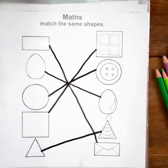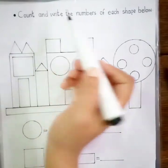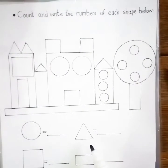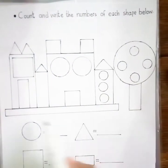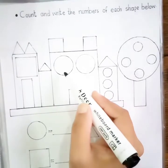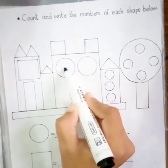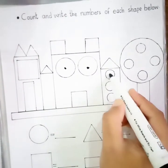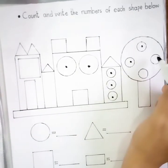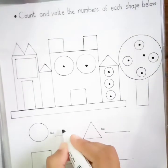Count and write the numbers of each shape below. In this worksheet, we have a picture with different shapes in it. We are going to start counting circles and then write the number here. How many circles are in this picture? Let's count: 1, 2, 3, 4, 5, 6, 7, 8, 9, and this big one is 10. So I will write 10 here.